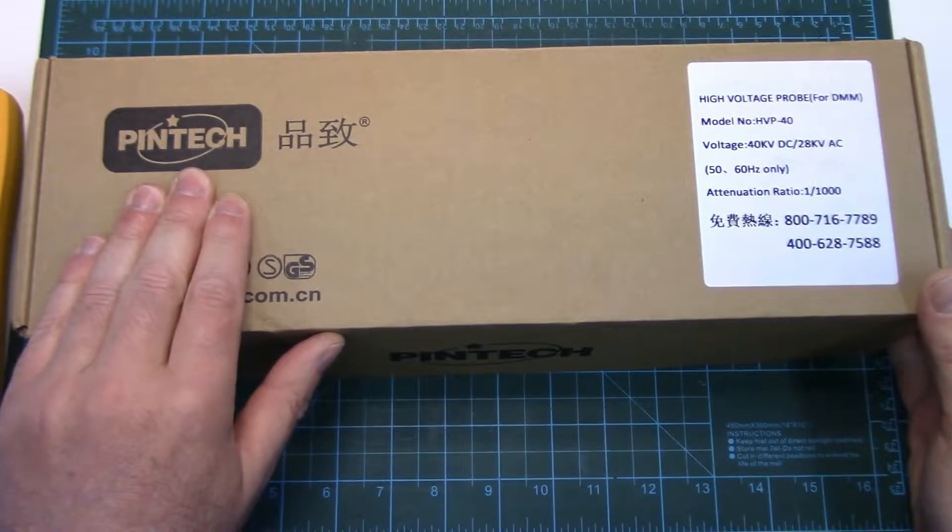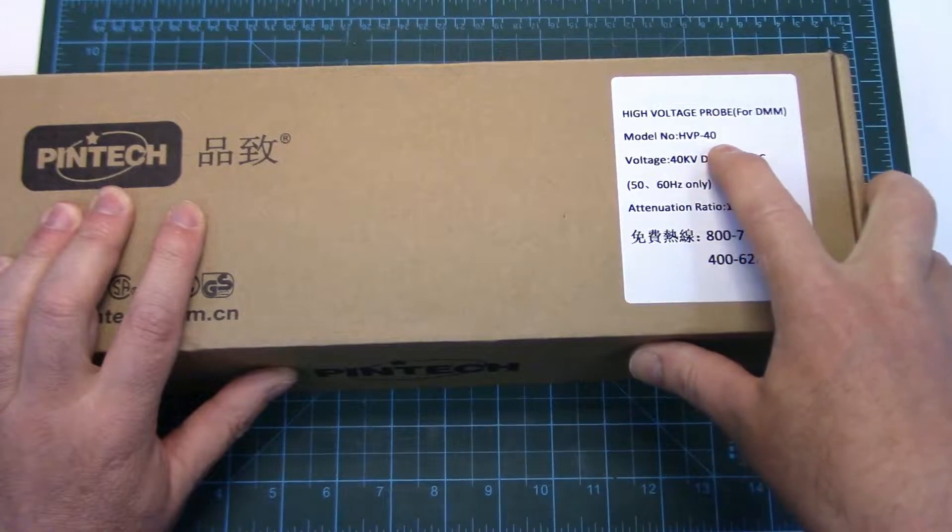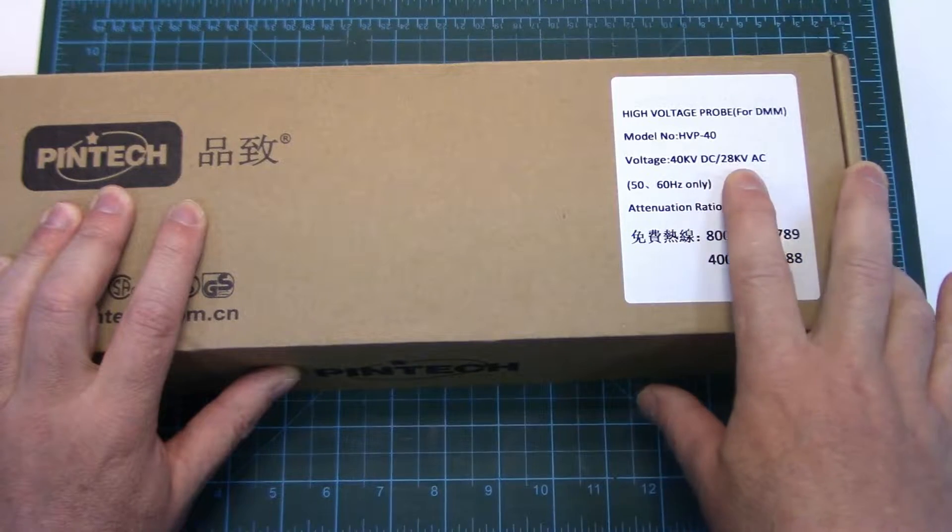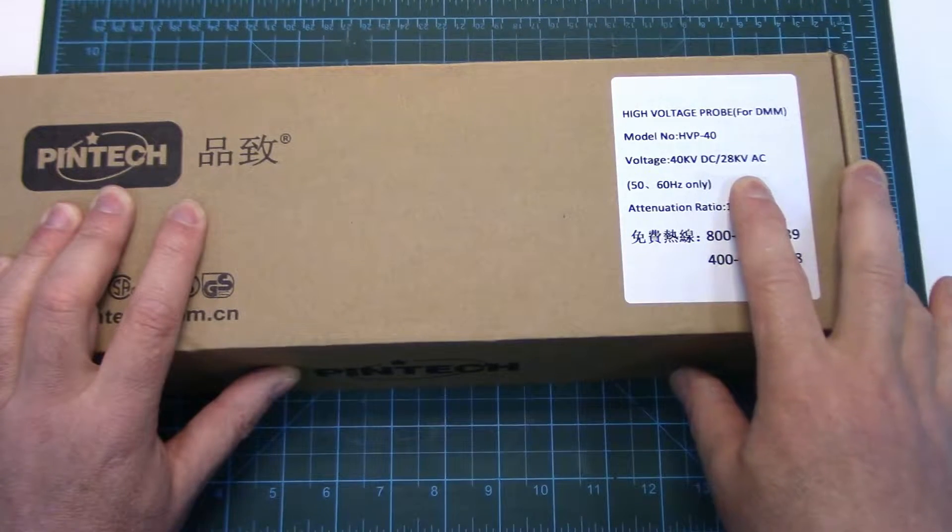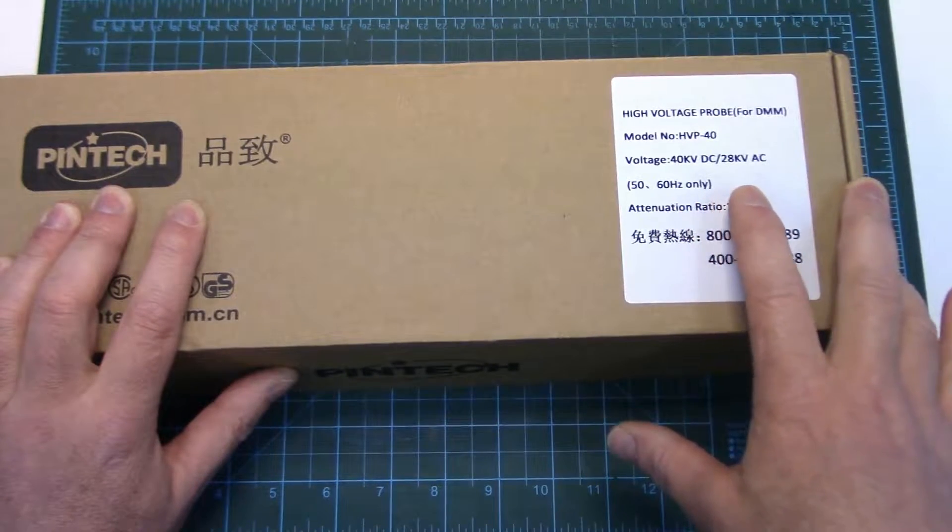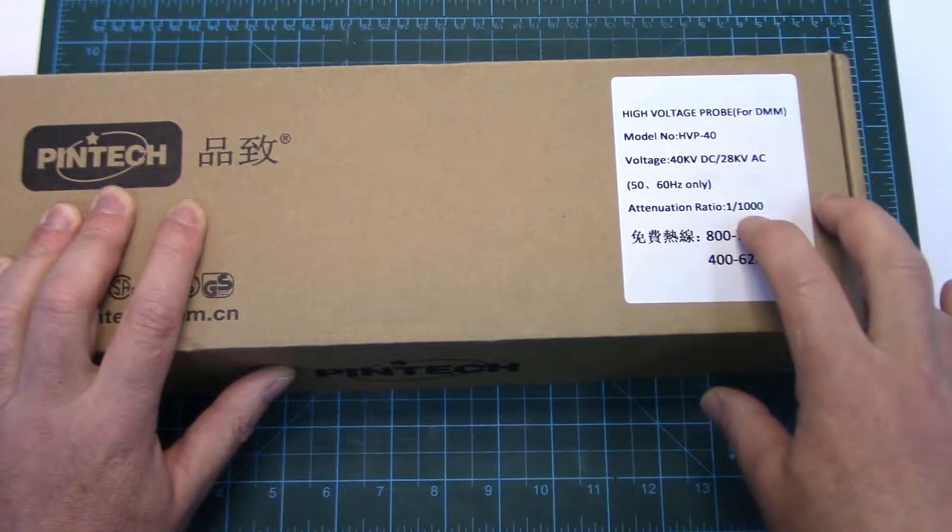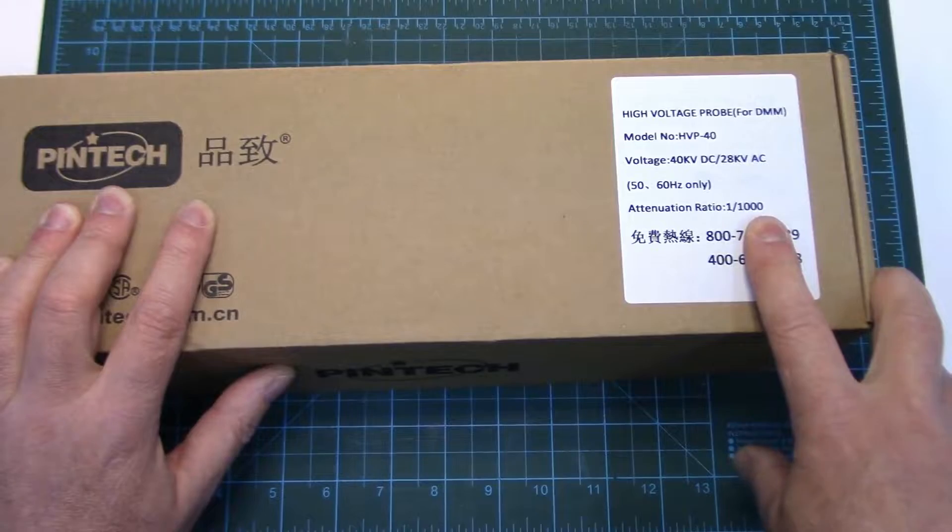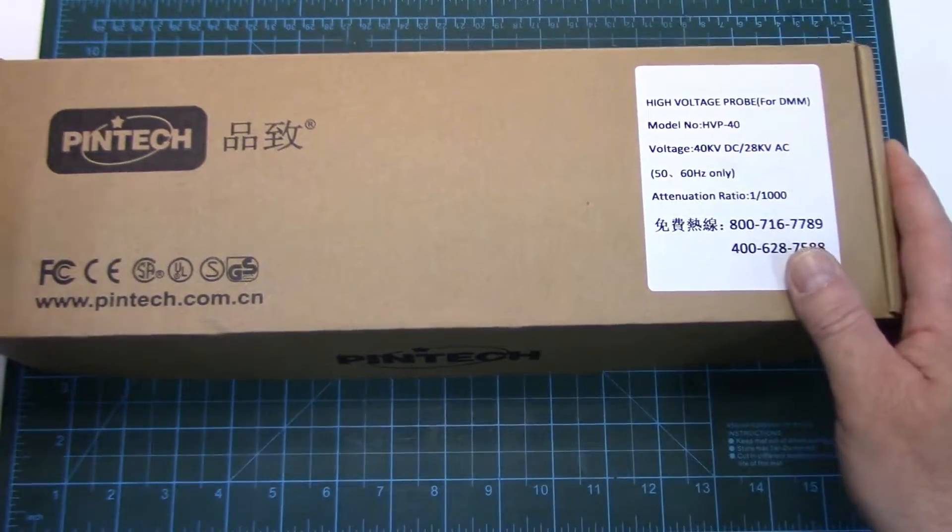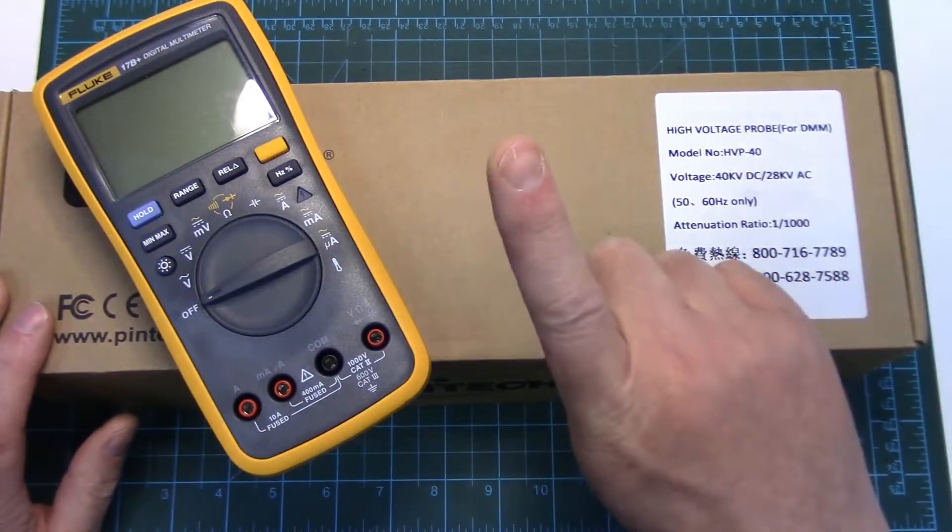This specific one is made by Pintec. It's their model number HVP40. The voltage range will measure up to 40 kilovolts DC or 20 kilovolts AC. In AC it does from 50 to 60 Hertz, so basically line type voltage frequencies and the attenuation ratio. All high voltage probes like this are very similar. This one's 1 to 1,000, meaning that for every 1,000 volts that you probe with the high voltage probe, your digital multimeter will read 1 volt.